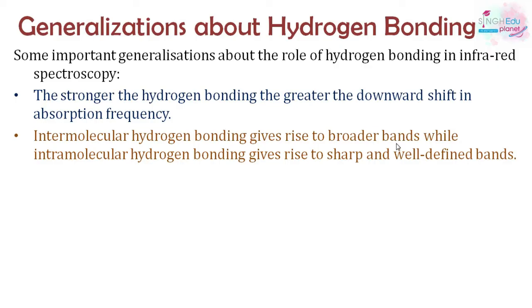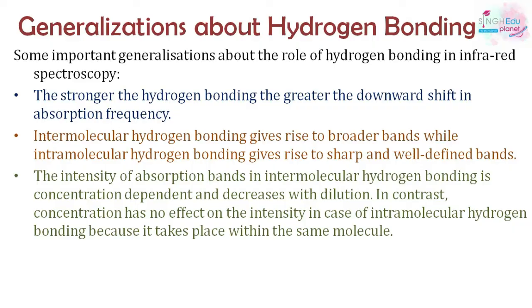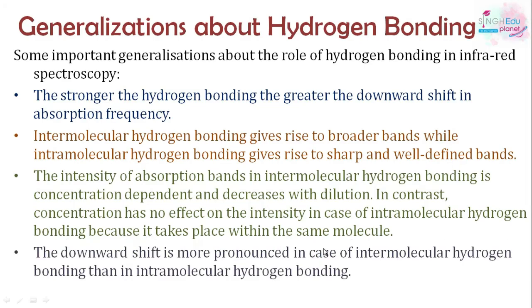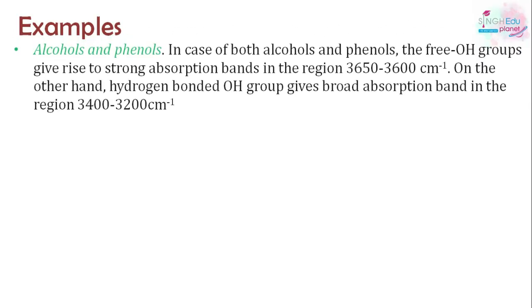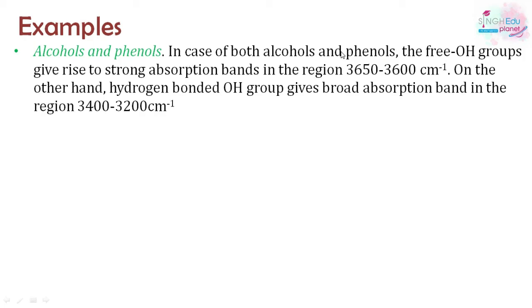The intensity of absorption bands increases with concentration of molecules in solution. Intramolecular hydrogen bonding is unaffected by dilution because the bond is within the same molecule. As for specific examples: free O-H groups in alcohols and phenols absorb at 3650–3600 cm⁻¹, but when hydrogen bonding occurs the absorption band shifts down to 3400–3200 cm⁻¹.